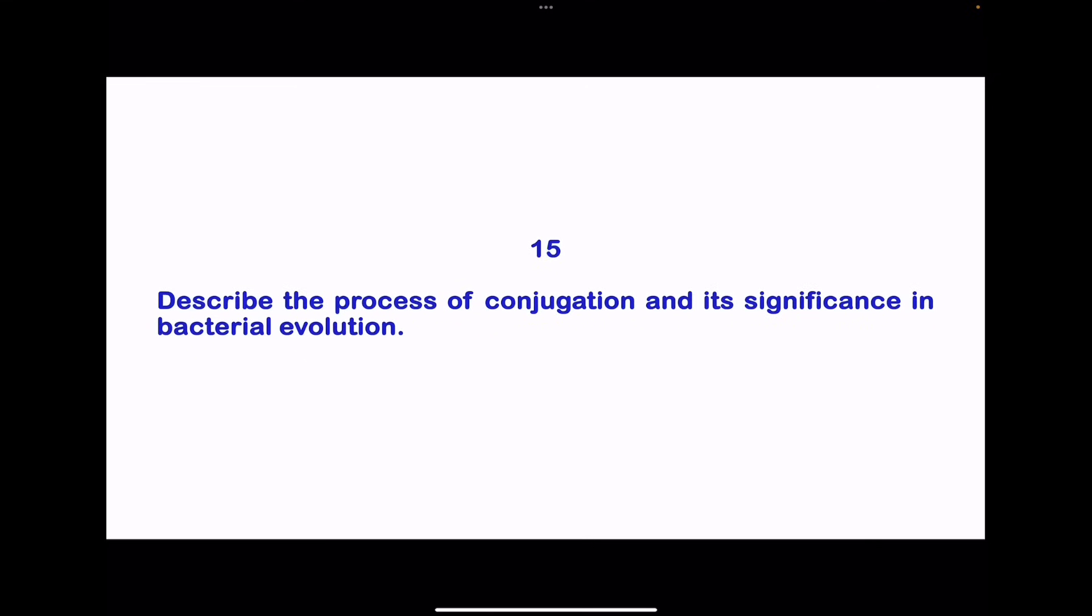In question 15, describe the process of conjugation and its significance in bacterial evolution. Conjugation allows for transfer of genetic materials such as plasmids between bacterial cells, contributing to genetic diversity and adaptation in bacterial populations.